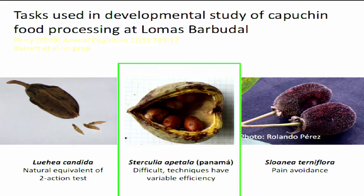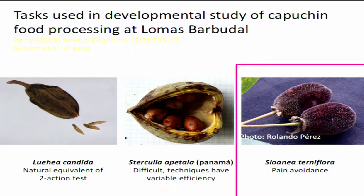The second fruit, Sterculia apetala or Panama, is a much more difficult task — opening these capsules requires strength, dexterity, and skill, something I can't do without a machete. This is a case where different techniques may be optimal for monkeys of different ages, sizes, and strengths. The third fruit is Sloania terniflora, where the challenge is to avoid pain — these are covered with nasty hairs. The wide variety of techniques used, many with apparently pointless stylistic flares, makes the task particularly useful for investigating the role of social transmission within and between groups. I'm going to talk about the first of these and then pass off to Brendan, who will explain some modeling techniques using our data.